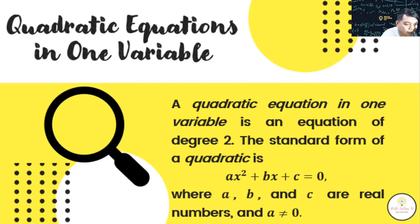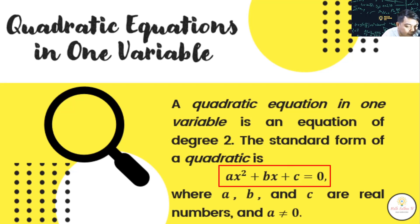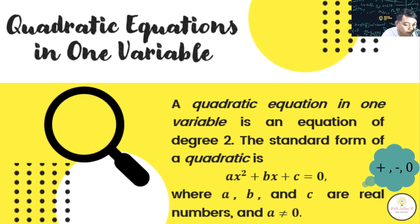So, quadratic equations in one variable. A quadratic equation in one variable is an equation of degree 2. The standard form of a quadratic equation is ax² + bx + c = 0, where a, b, and c are real numbers and a is not equal to 0. When we say real numbers, those are numbers that are positive, negative, or 0.